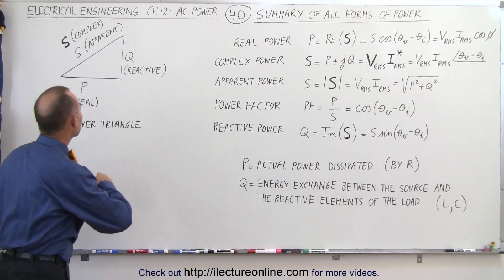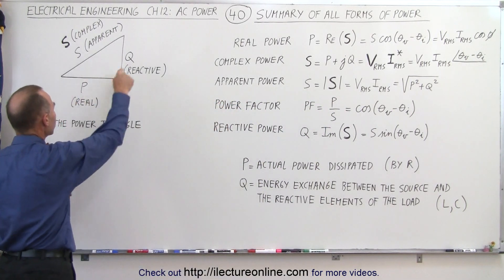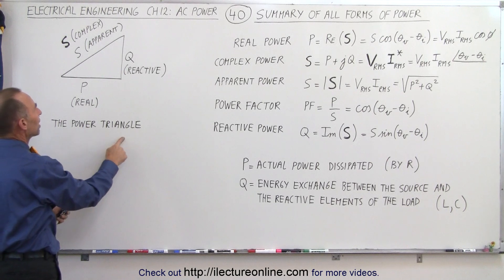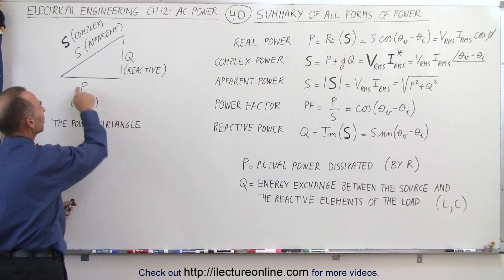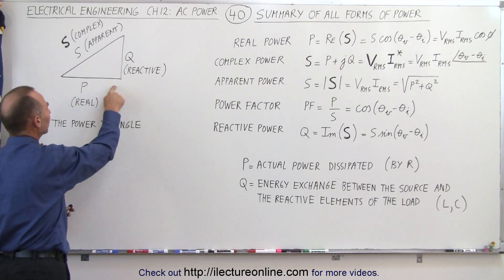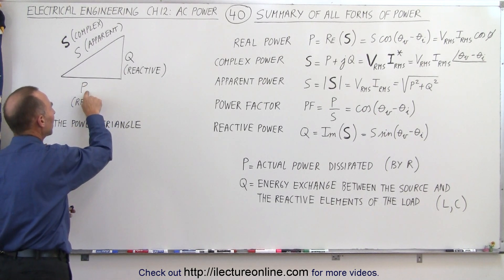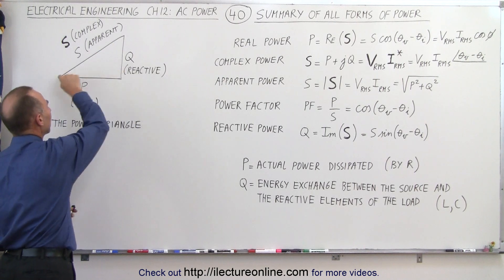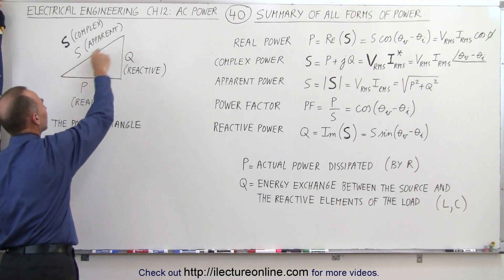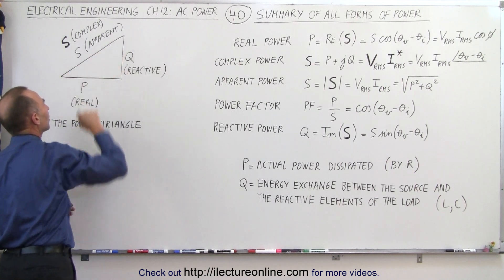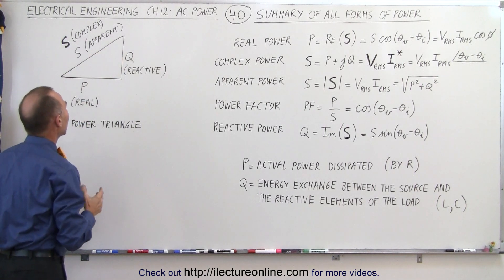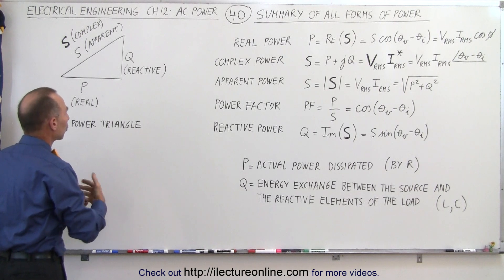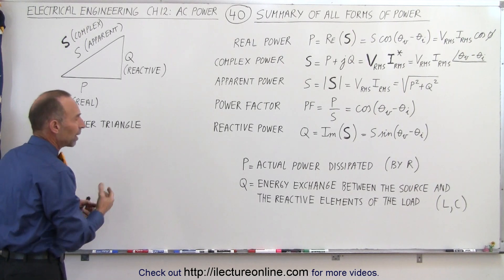If we take a look here at this triangle, this is called the power triangle. On the horizontal axis, we have the real power. On the vertical axis, we have the reactive power. And on the diagonal here, on the hypotenuse, we have what we call the apparent power or the complex power.